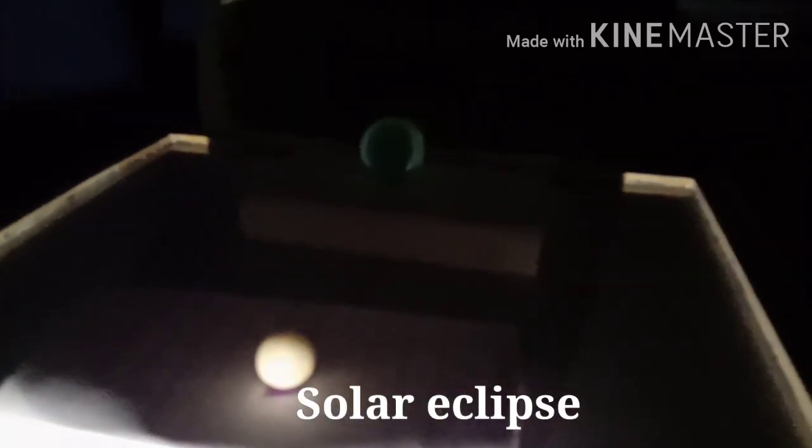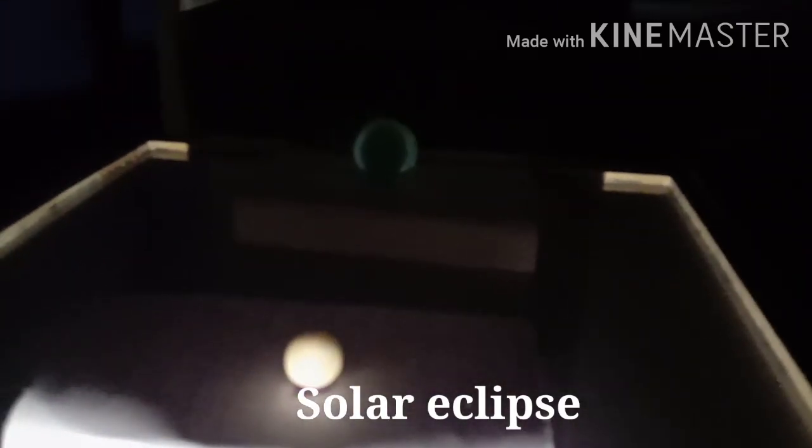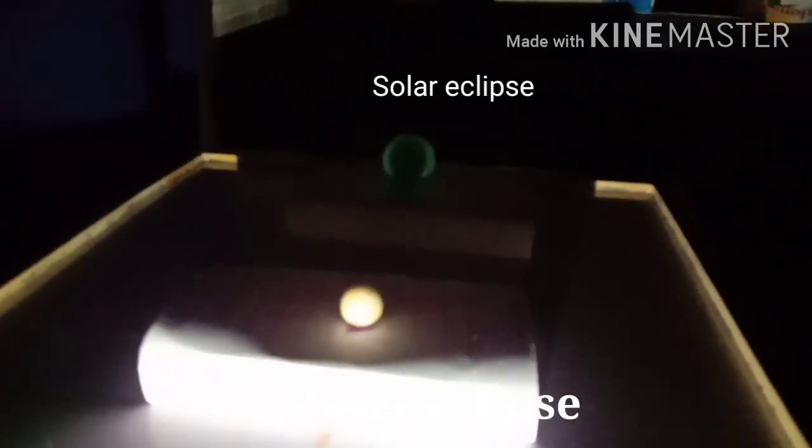Hence, the place on the Earth where the Moon's shadow falls experiences a solar eclipse. This shadow is of two types. The central portion of the shadow is darker and the periphery is light.